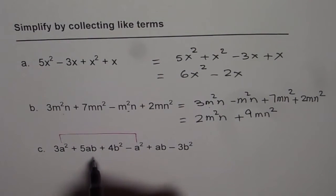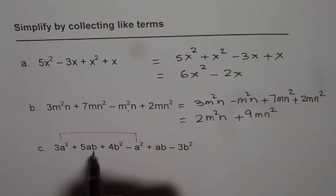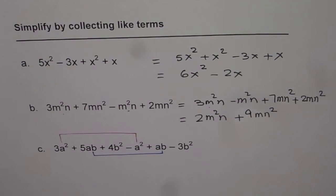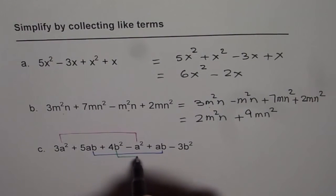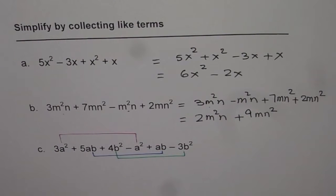And then we have ab, right? So we have ab and ab as the like terms. And we also have b² as the like terms. So we can combine these like terms.